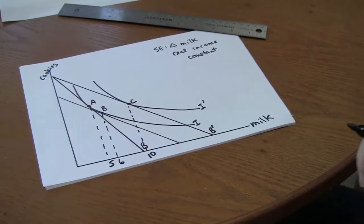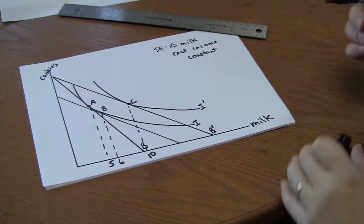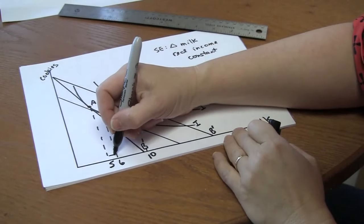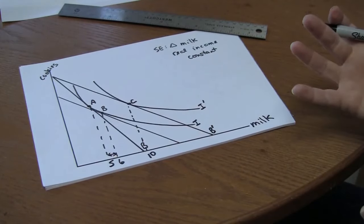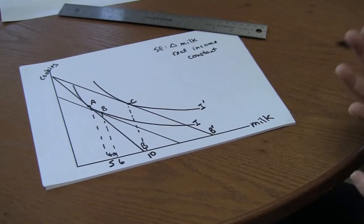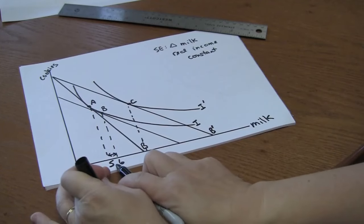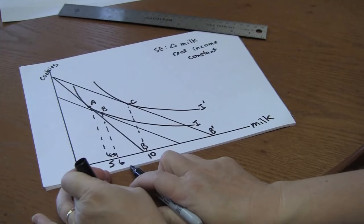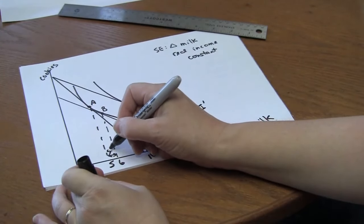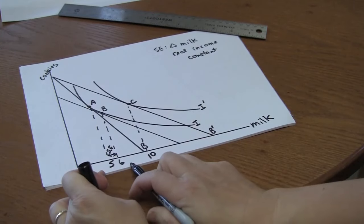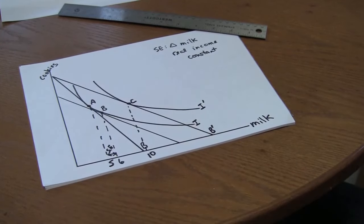What that tells us is that the effect of the change in relative prices holding income constant is to increase milk consumption by one cup. That's the substitution effect. The movement from five to six glasses of milk.